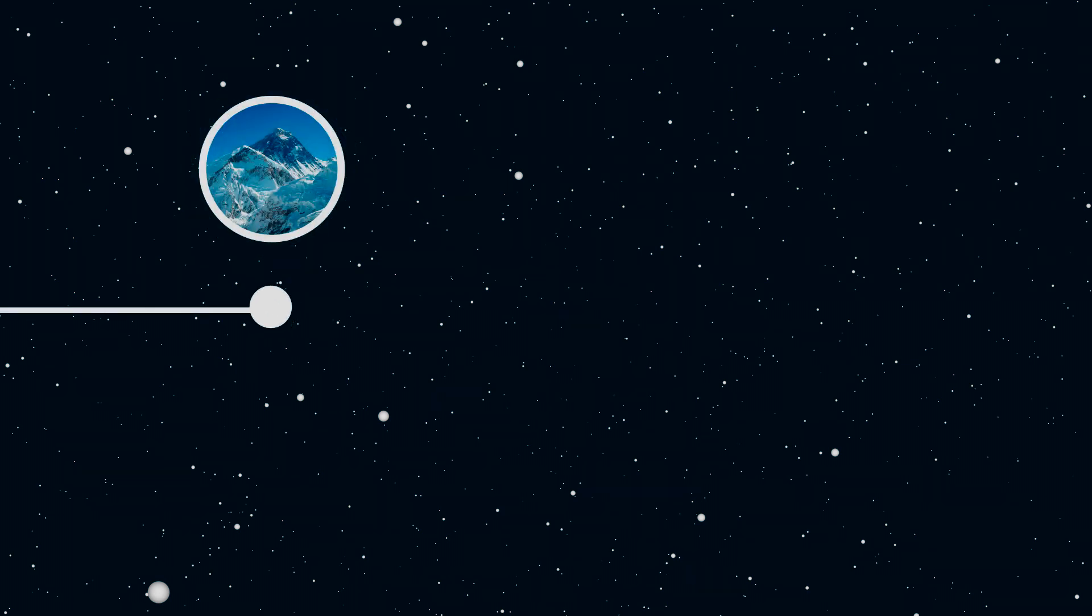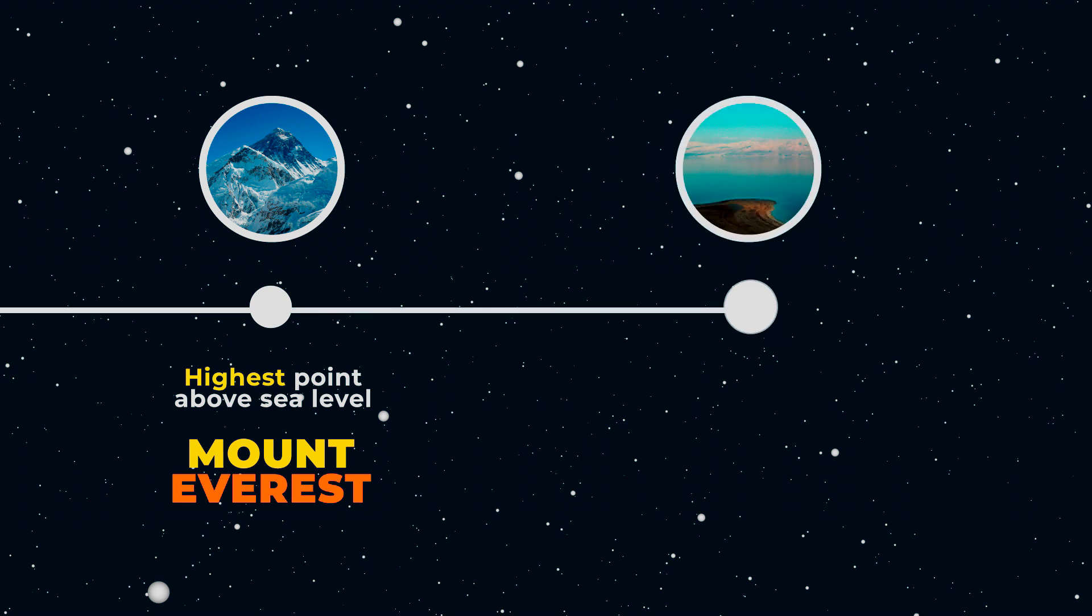The highest point above sea level is Mount Everest, measuring 8,848 meters above sea level. The lowest exposed land on Earth is the Dead Sea shore, measuring around 400 meters below sea level.